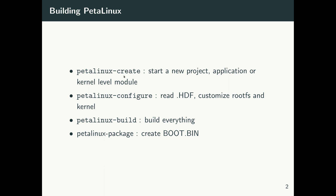In this video I'm going to show how we build PetaLinux. From the Vivado project we obtained the HDF file — the hardware definition file. We will use petalinux-create to create a PetaLinux project, then petalinux-config to read the HDF file, then again petalinux-config to customize the root file system, and in the next video I'll use petalinux-config to customize the Linux kernel.